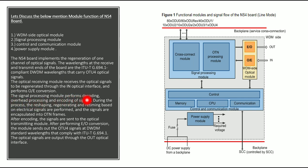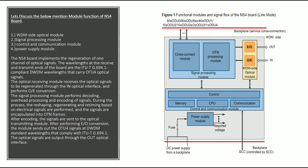The signal processing module performs decoding, overhead processing, and encoding of the signal. Reshaping, regeneration, and retiming based on electrical signals are performed and the signals are encapsulated into an OTN frame. After encoding, the signals are sent to the optical transmitting module. After performing electrical to optical conversion, the module sends out the OTU4 signal at DWDM standard wavelength compliant with ITU-T, output via the out-optical interface.